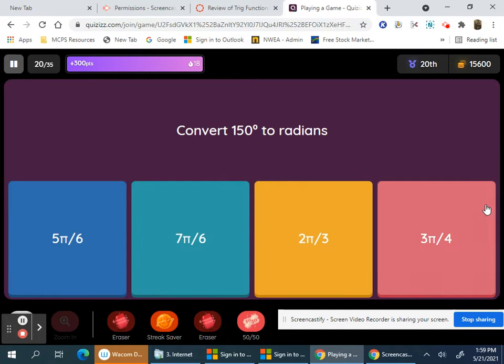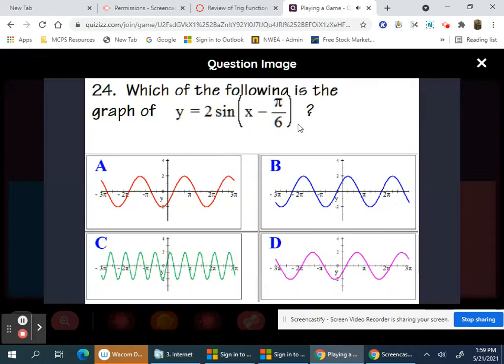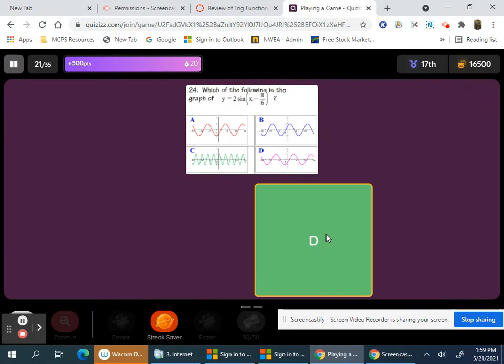150 pi over 180. 150 divided by 30 is 5 pi over 6. 180 divided by 36, so 5 pi over 6. Which of the following is 2 sine x minus pi over 6? You're having a phase shift on the center line of pi over 6. That's this one here, D.